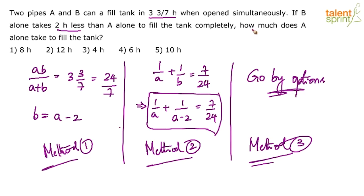What is he asking us to find out? How much time does A alone take to fill the tank? Which means the options given here are nothing but time taken by A alone to fill the tank. So according to option 1, the time taken by A alone is 8 hours. If time taken by A alone is 8 hours, time taken by B alone would be 6 hours.